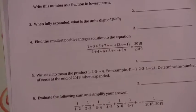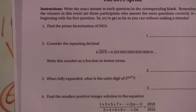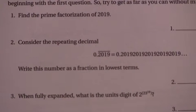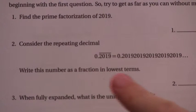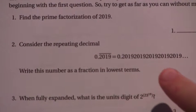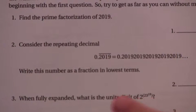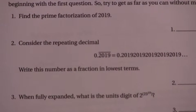Alright, problem number two. We'll zoom in on it and then I'll try to remember to zoom out. So we have the repeating decimal 0.2019 repeating. Write this number as a fraction in lowest terms.